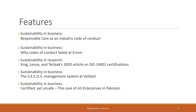The chapter includes several illustrative features. The first sustainability-in-business feature covers the Responsible Care program, an industry code of conduct in the chemical sector. The second is also about codes of conduct — specifically company codes of conduct — using the example of Enron and why codes of conduct failed there, a famous case of a company going bankrupt due to malpractice.